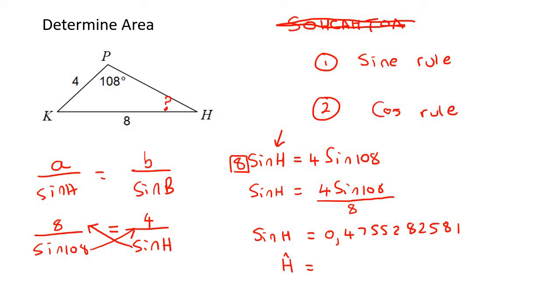Then to get H by itself, the angle, you would have to say shift sin or inverse sin or second function sin, however your teacher explains that. And if you had to go work this out, you should get 28.39 degrees. So that's angle H, 28.39 degrees.